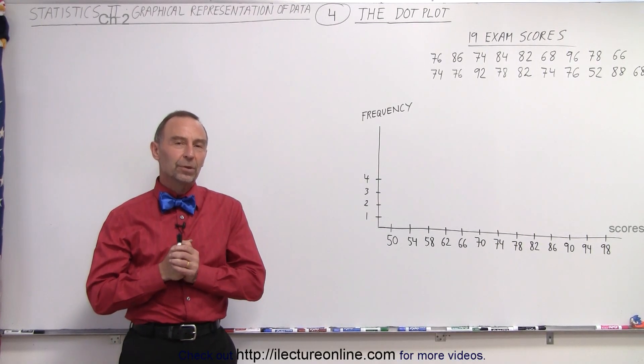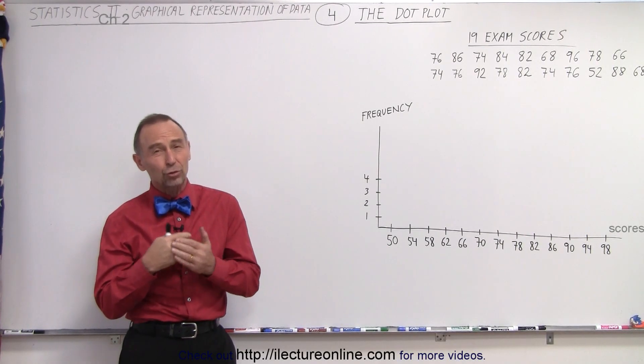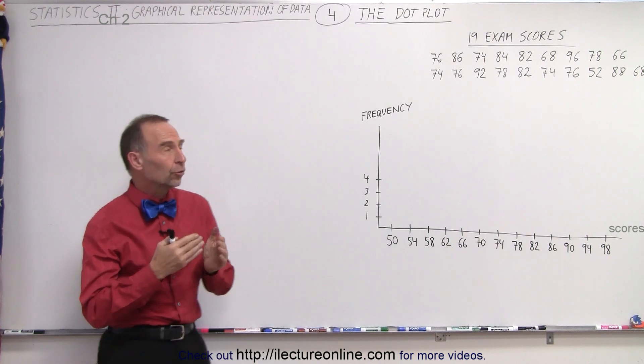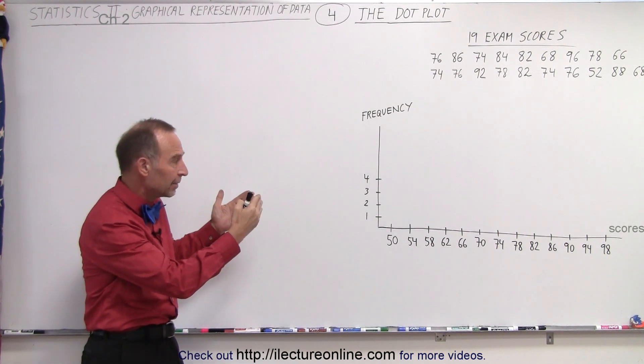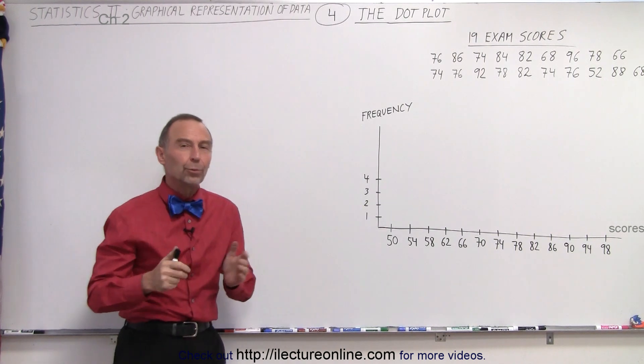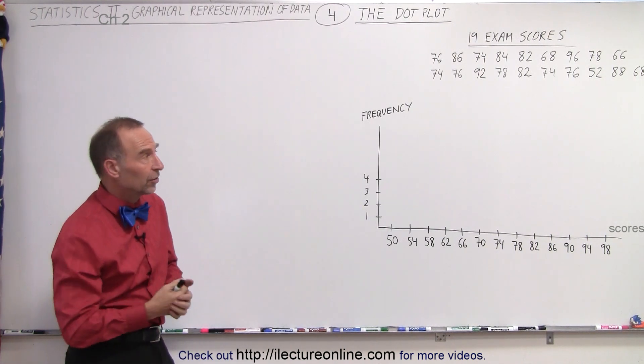Welcome to iLecterOnline. The dot plot is kind of like a pseudo bar graph. It also gives you a frequency rating or a frequency accounting of a certain data range or a particular data set.